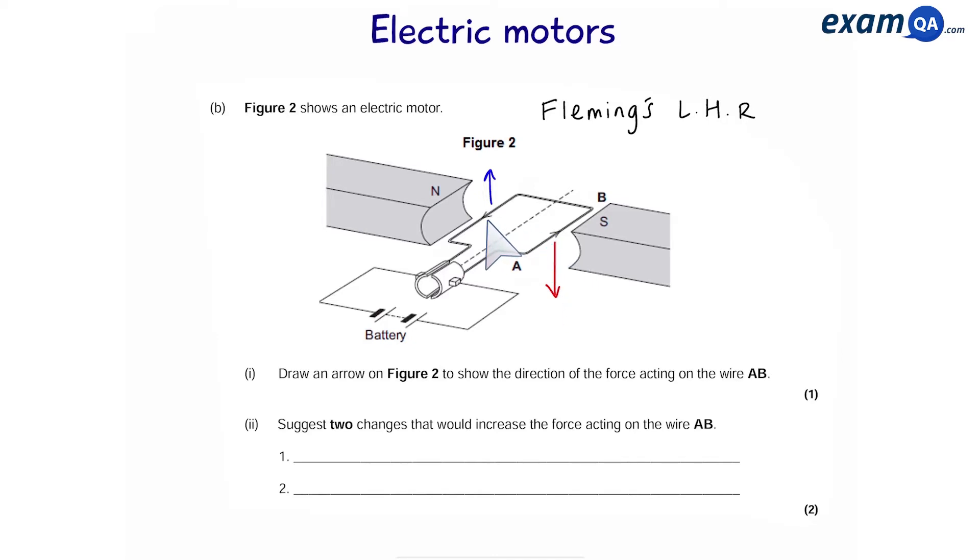When you change the current, the direction swaps. And the same goes if you were to change the magnetic field.